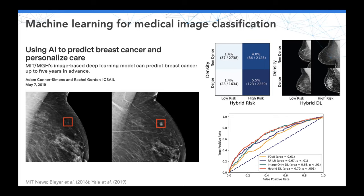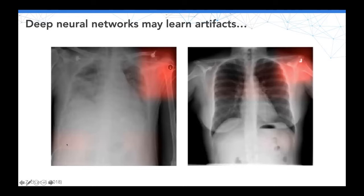One issue with convolutional neural networks for medical image classification is that deep neural networks may learn artifacts. For example, in a study by Zech et al. 2018 using chest radiographs to diagnose pneumonia, the data was unbalanced: some hospitals receive more patients with the condition. The neural net may be learning not clinical features but artifacts from different acquisition protocols in each hospital — so what's being learned is artifacts that act as a surrogate for the physiology or underlying anatomy explaining the disease.